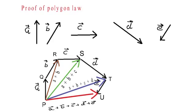And therefore, the side PU, which joins the tail of A and the head of E, is the vector sum of the five vectors. And thus, this is the proof.